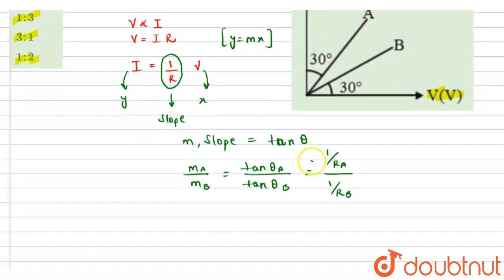So if I take the, if I solve this, the RHS part, we will get R B over R A must be equals to tan theta of A divided by tan theta of B.